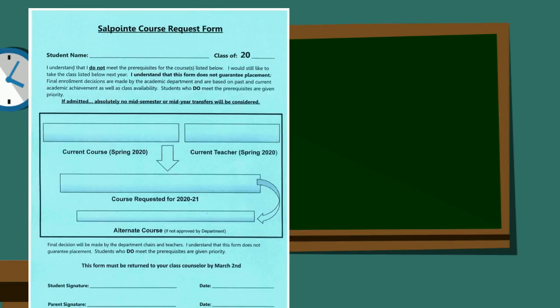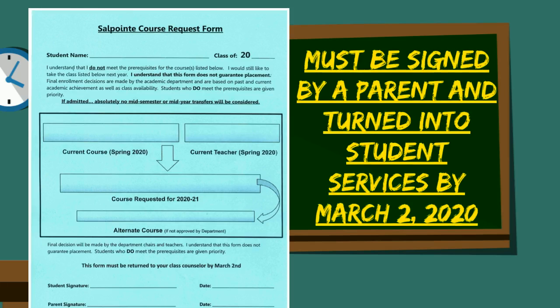This is the course request form. This was given to students during their registration meetings in classrooms and can be picked up at the Student Services Office. Again, this must be signed by a parent and turned into Student Services by March 2nd.